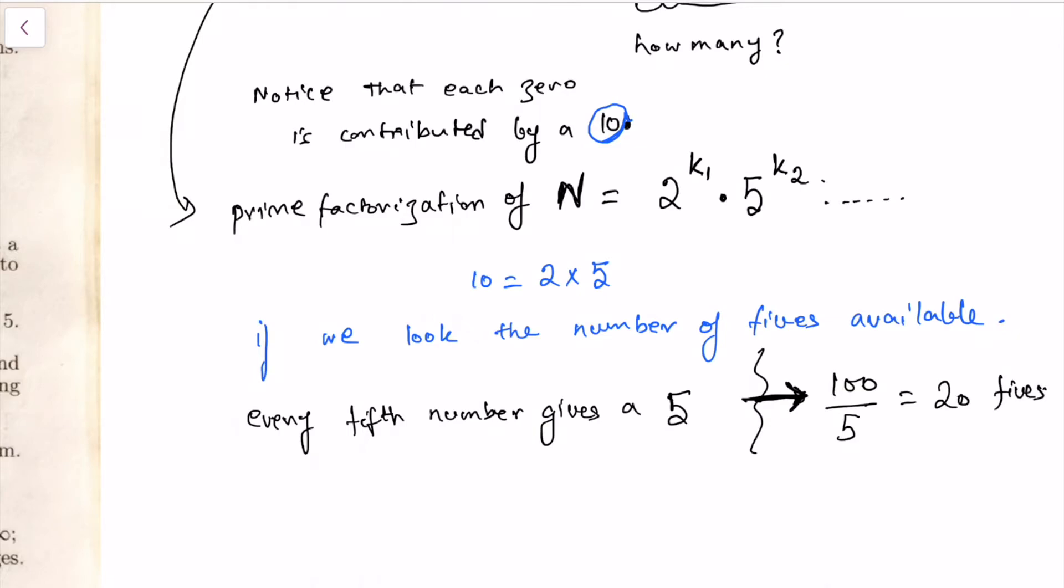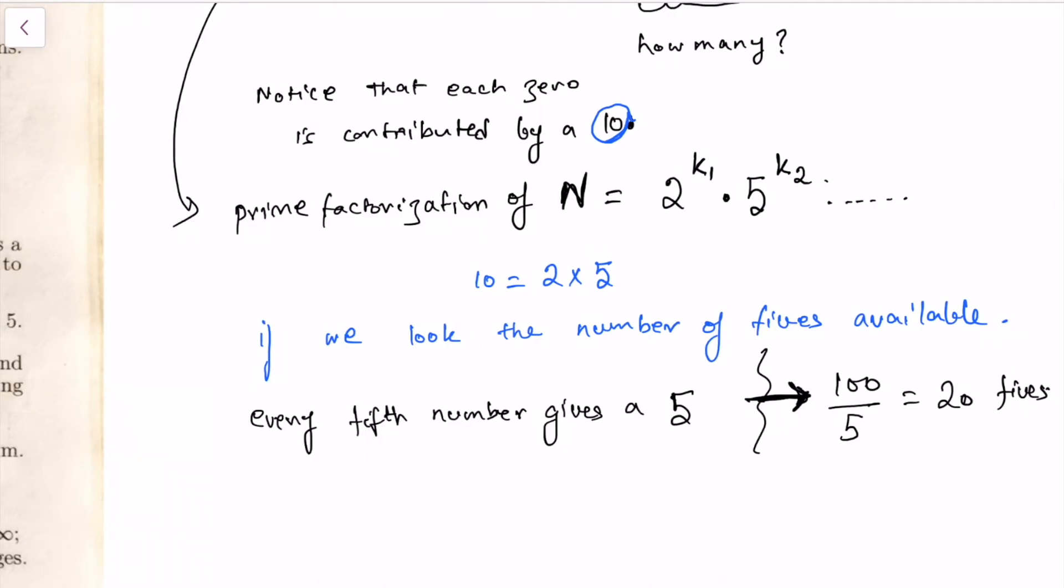But every twenty-fifth number will contribute one extra five, because they are contributing two fives and one of them is counted here in the first round. So let's call this first round of counting. In the first round of counting we have counted one five from each fifth number. There are twenty such numbers.